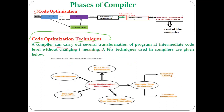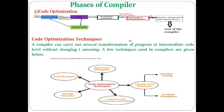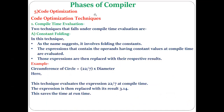A compiler can carry out several transformations of a program at the intermediate code level without changing its meaning. There are different techniques available for code optimization: compile-time evaluation (including constant folding and constant propagation), dead code elimination, code movement, strength reduction, and common sub-expression elimination. These are the important techniques in code optimization.